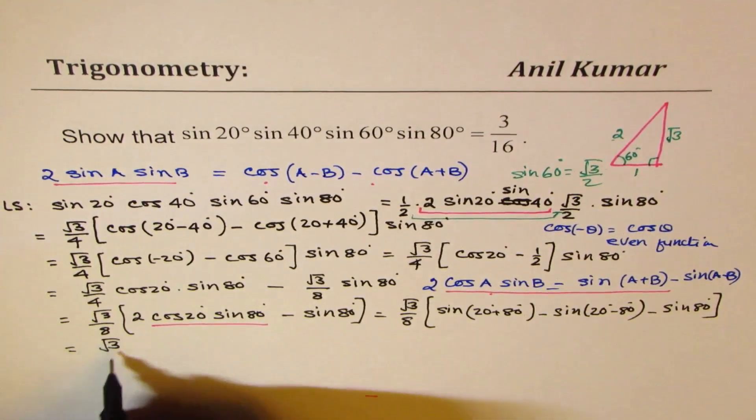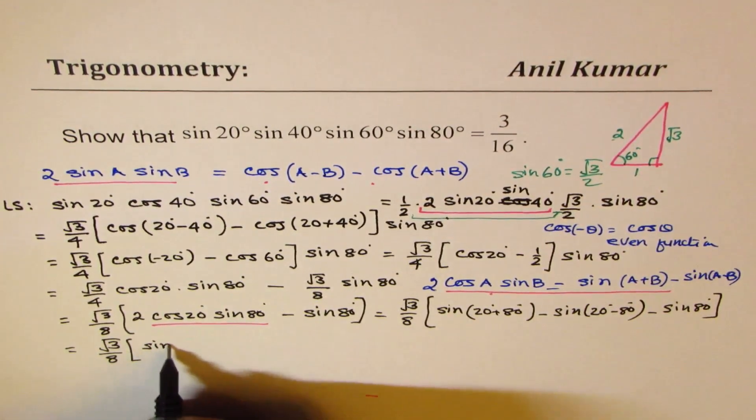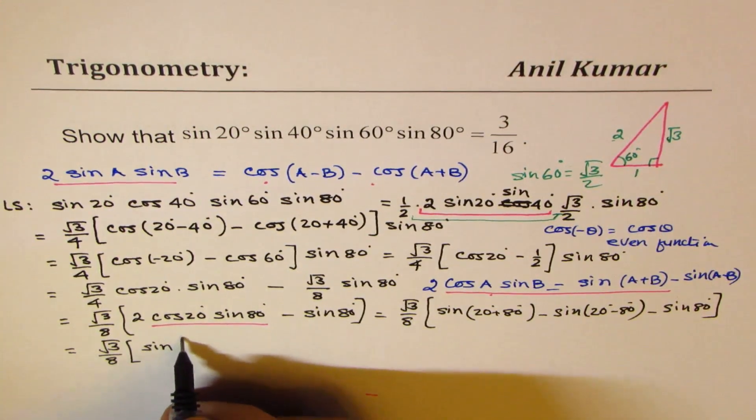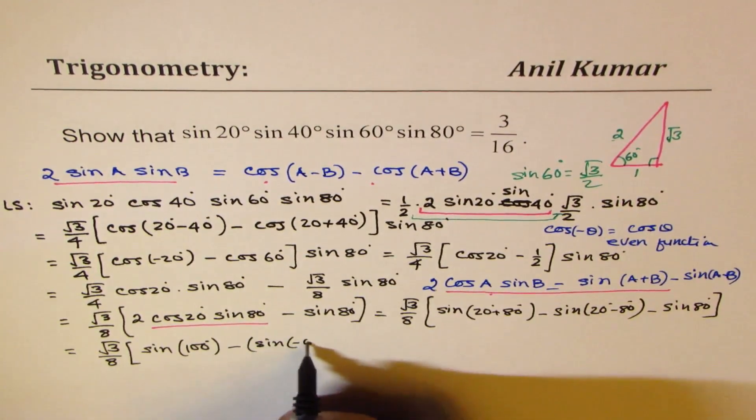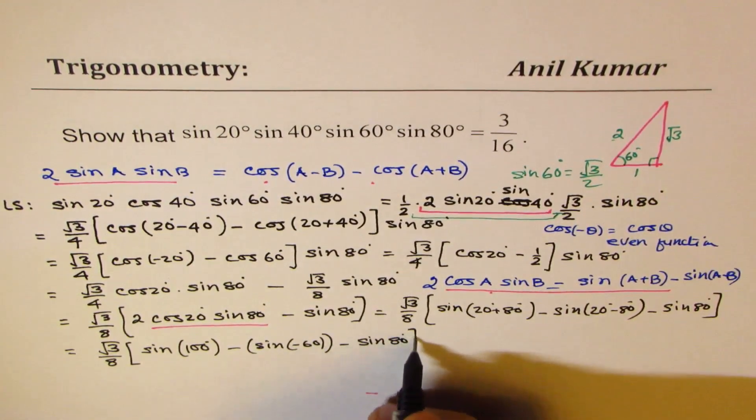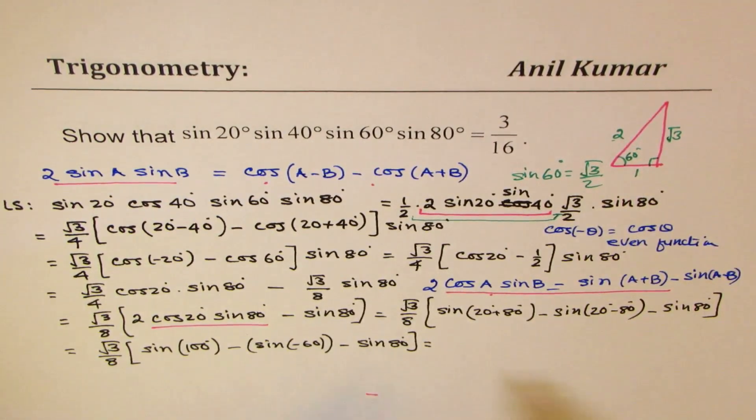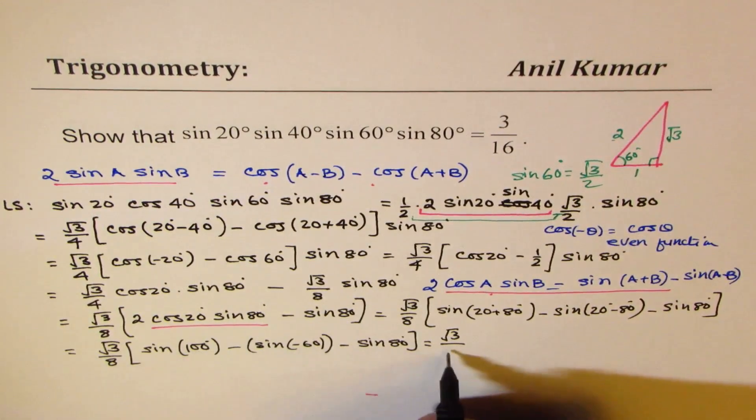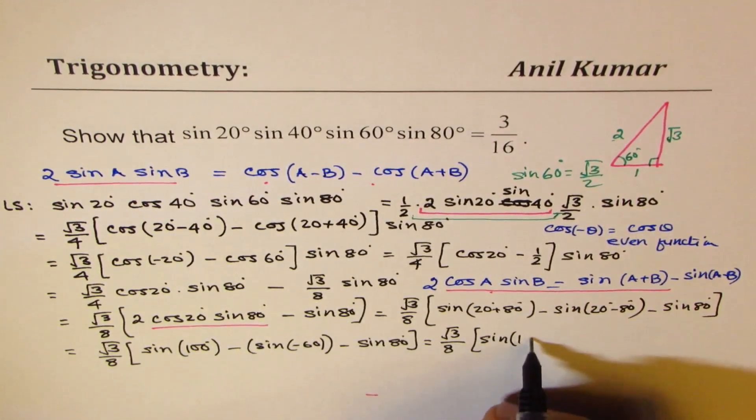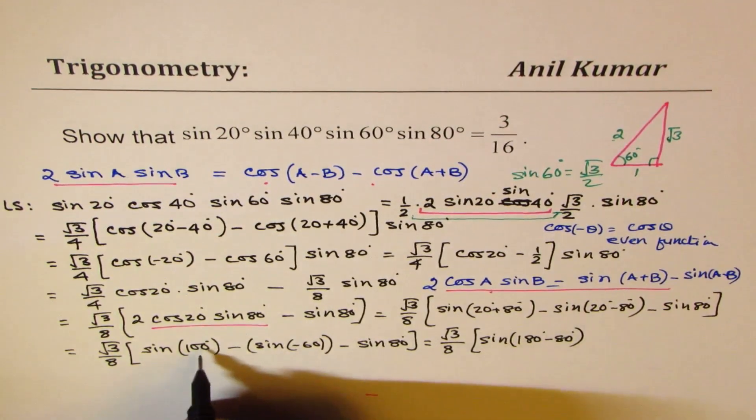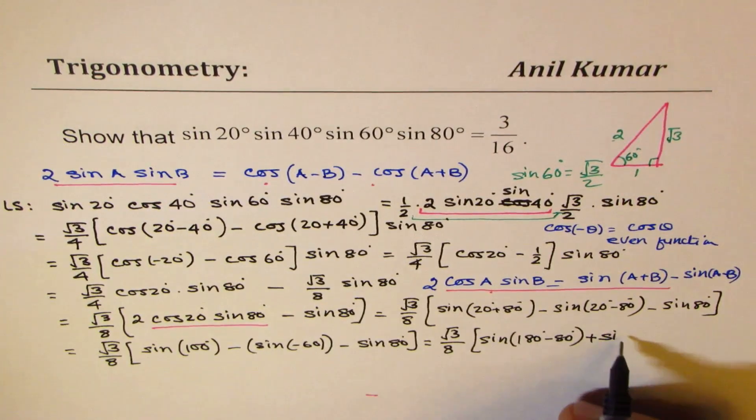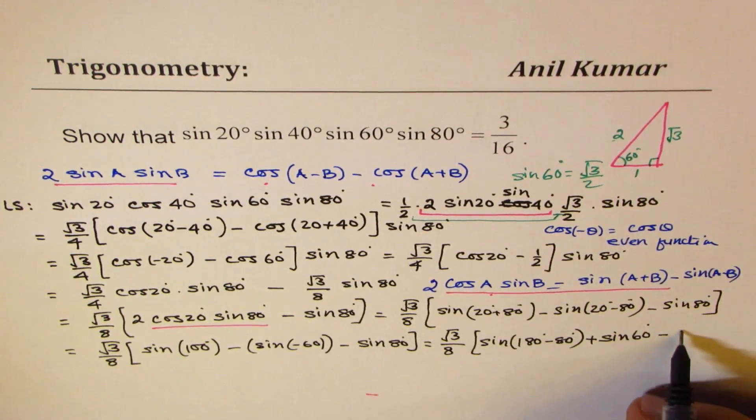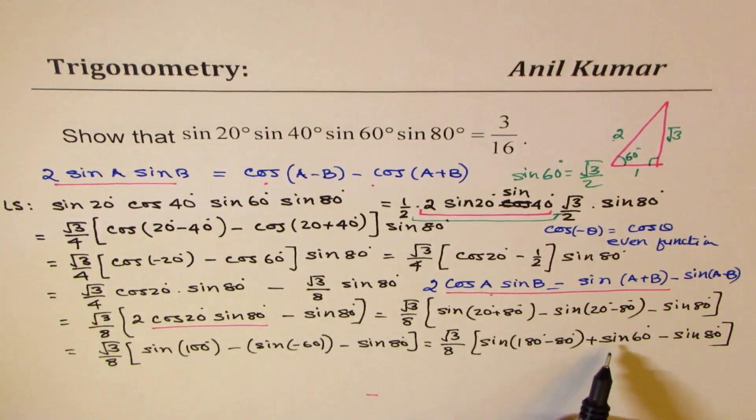So that gives us, √3 over 8, and that's a sine of 60°. I mean, 20 + 80 is 100°. Okay, 100°. Minus, I mean, sin(-60°). Minus 60°. And we have minus sin 80°. Now, how could you write 100° with 80°? 180 - 80. Does it make sense to you? Yes, it does. So we'll replace 100 with sin(180 - 80°). That is 100°. Minus sin 60 becomes negative. So I could write this as positive sin 60°. And we have minus sin 80°.